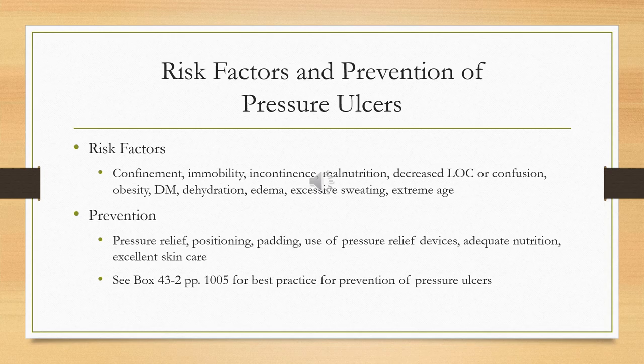If a patient is identified as at risk for developing a pressure ulcer, implement pressure-relieving devices such as air mattresses. Reposition the patient every two hours. Use pressure-relieving devices in the bed and chair. Ensure proper nutrition, provide excellent skin care, and wash incontinent patients with soap and water. The book on page 1005, box 43-2, has best practices for pressure ulcer prevention.